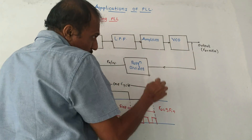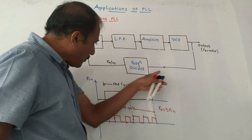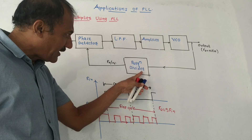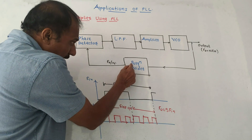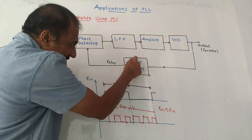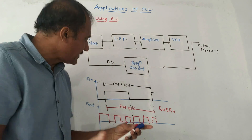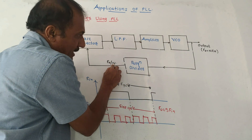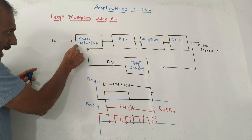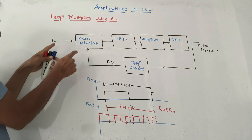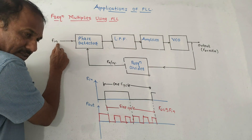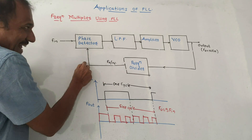This is the feedback path. We are taking feedback from the output to the input side. In the feedback path, we are using a frequency divider network. The output of the frequency divider network is F0 divided by n, because this block divides the frequency by some integer amount n. So the output of the frequency divider block is F0/n. At the input of the phase detector, we are applying Fn. So there are two inputs for the phase detector: one is Fn, that is the input frequency, and the other is F0/n.